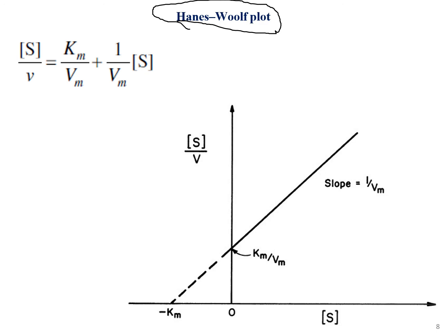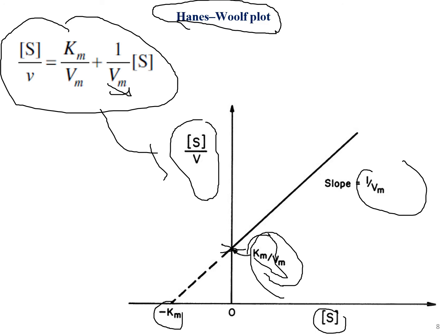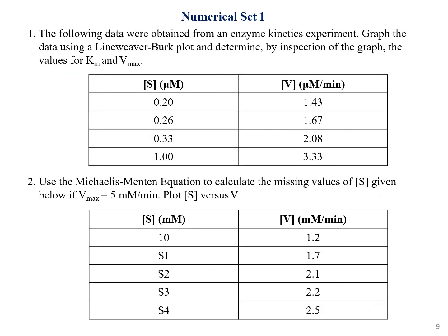The third model is the Hanes-Woolf plot, which is a partial reciprocal plot (not a double reciprocal like Lineweaver-Burk). The y-axis is S/V and the x-axis is S. The x-intercept is −Km, the y-intercept is Km/Vm, and the slope is 1/Vm.